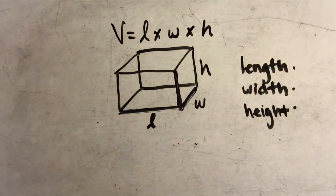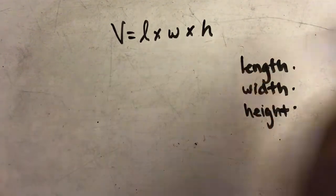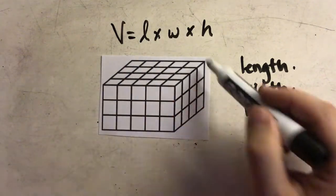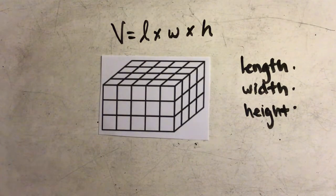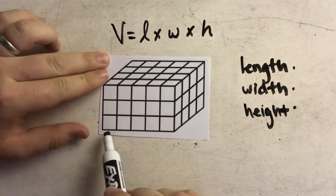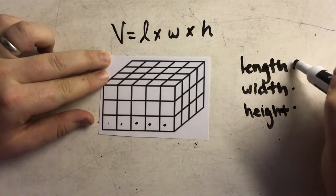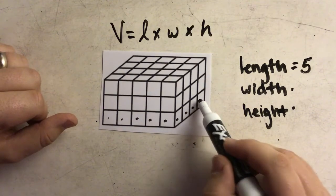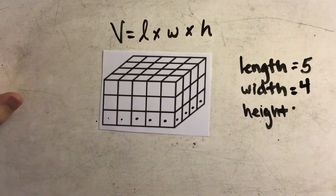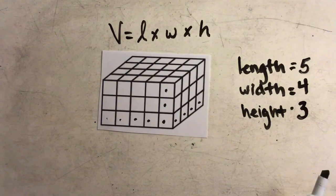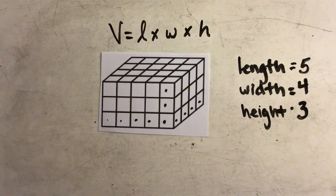Let's look at an example. This time there are no given measurements — we just have little cubes stacked in a rectangular prism shape. To find the length, width, and height, I simply count the cubes. Along the bottom row I count one, two, three, four, five — so the length is five. Going backwards I see one, two, three, four cubes — so the width is four. Going up from the bottom I count one, two, three cubes — so the height is three.